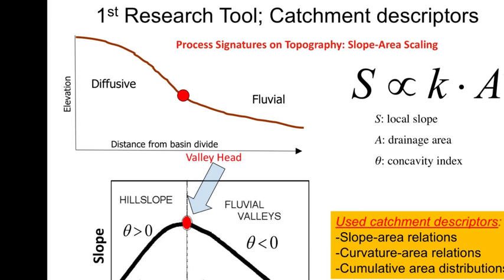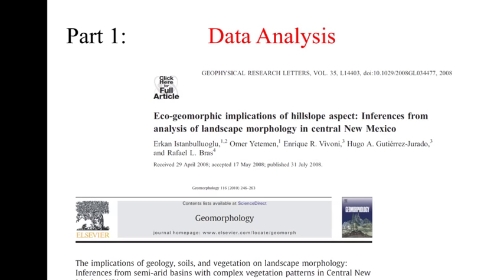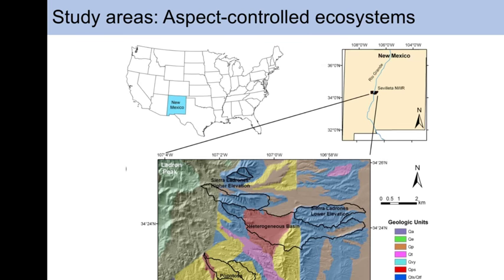The slope-area diagram: if you plot on a log-log scale, slopes are increasing in the diffusive region as area increases, and then after the transition point slopes are decreasing in the fluvial portion. We call these convex hillslopes and concave valleys. The relationship is: S = k × A^θ, where A is drainage area, S is local slope, and θ is the concavity index. In New Mexico, these are color-coded geologic units — Sierra Ladron formation and Papadosa formation — representing different geologic units.